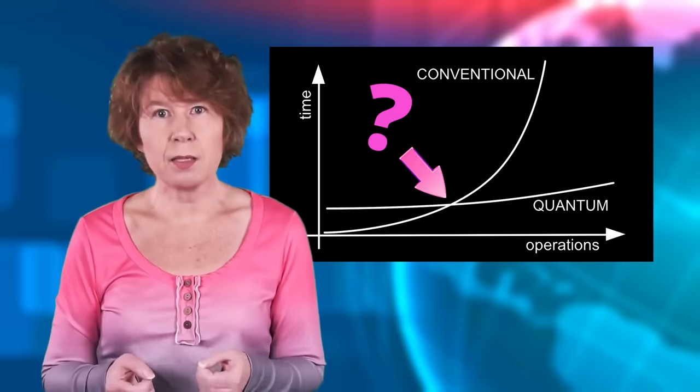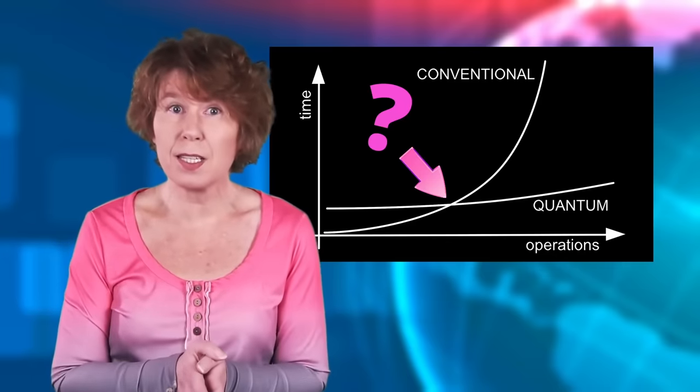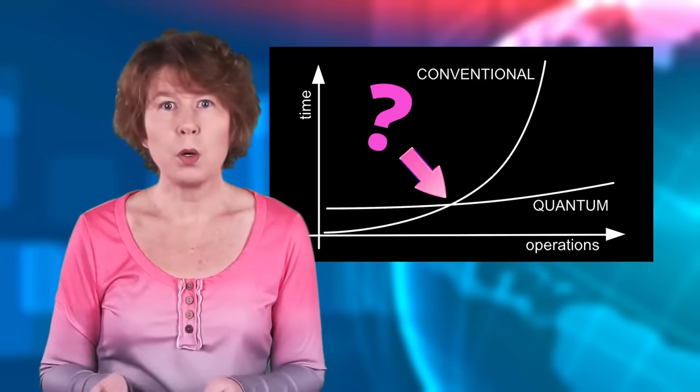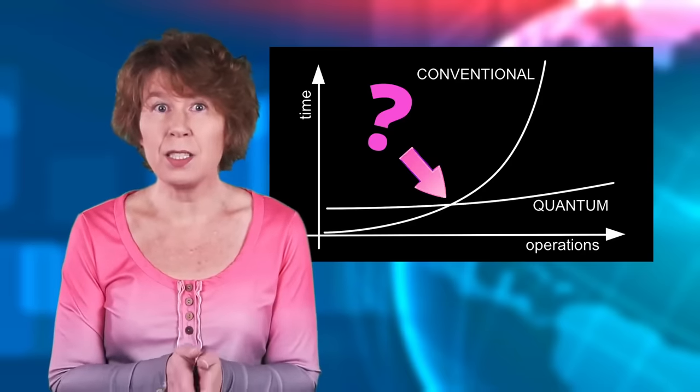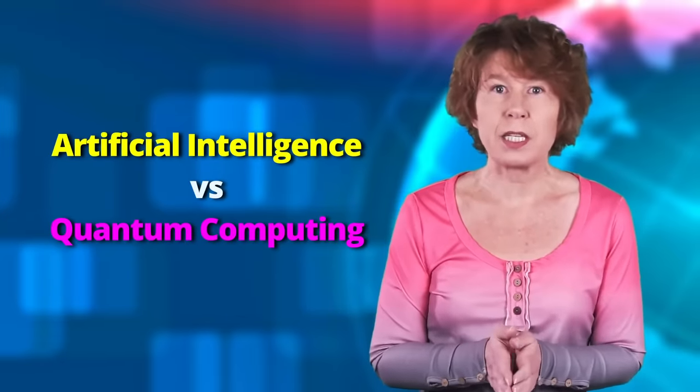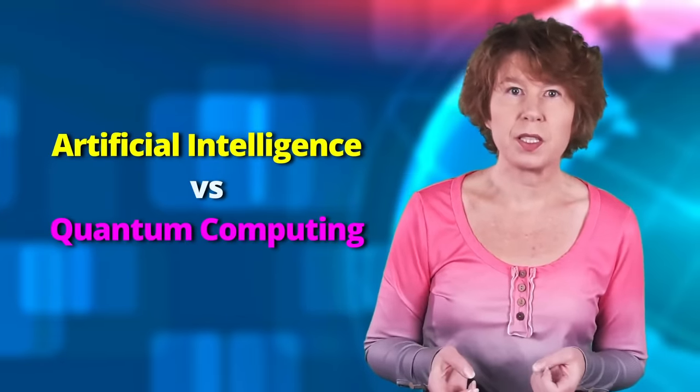Because each time conventional computers become faster or someone comes up with a better algorithm, the point where quantum computers finally win moves further away, to a higher number of qubits.